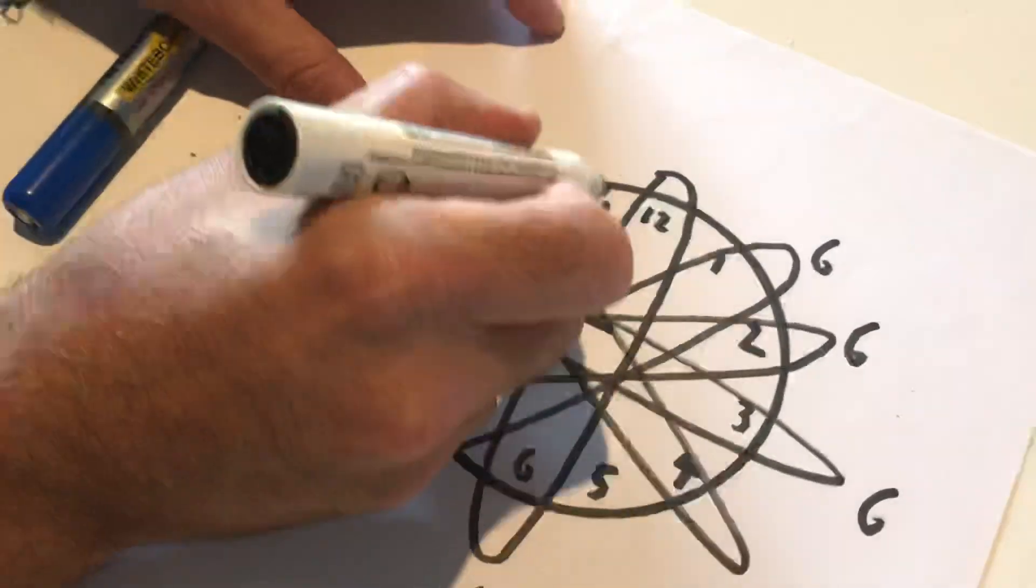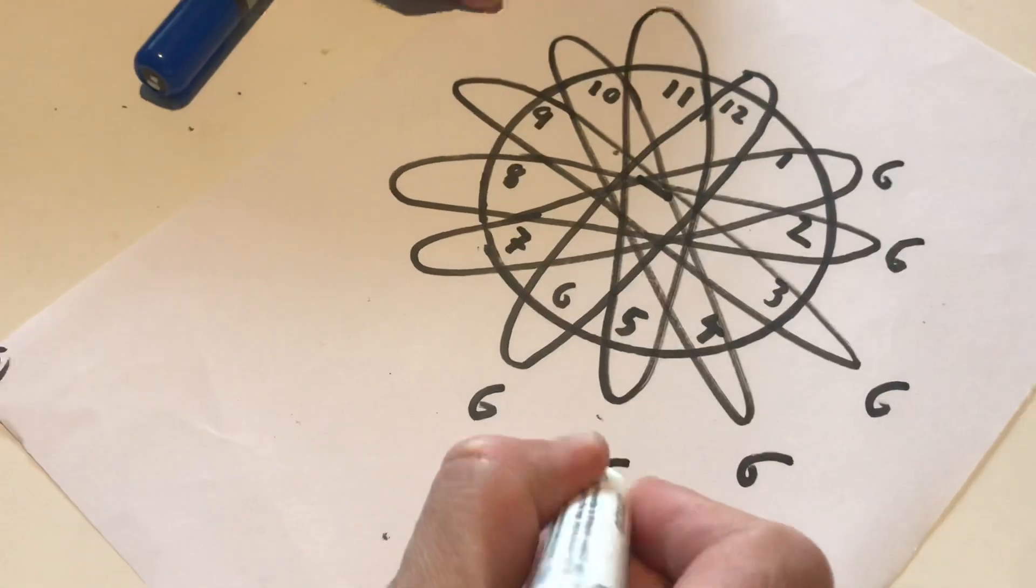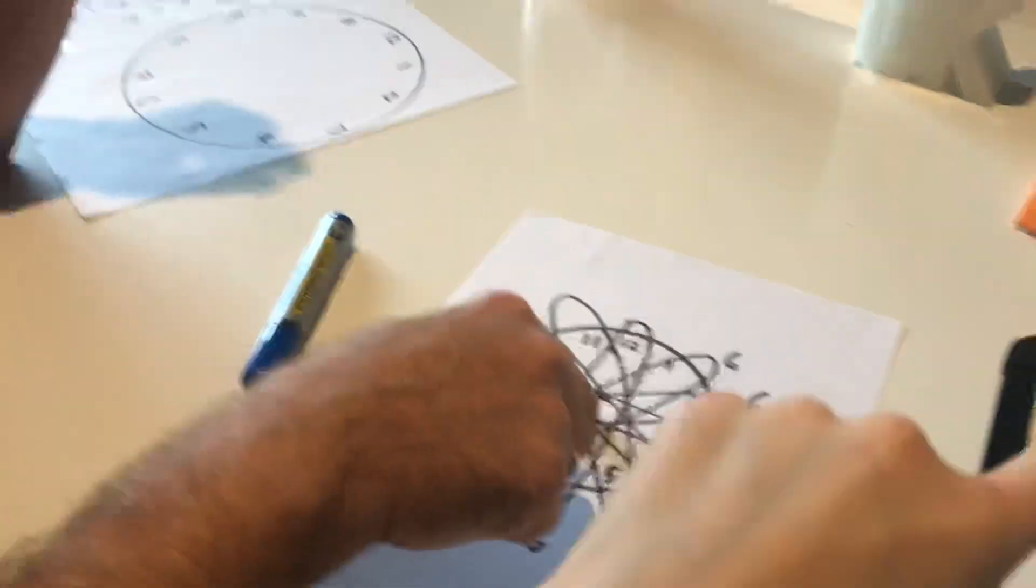11 minus 5 is 6. That's a pretty good one. Alright. It makes a pretty shape as well. So. Yeah, it looks kind of like subtraction. It does, doesn't it?